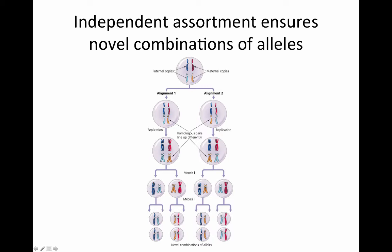This means that copies of the chromosomes inherited from the father and those inherited from the mother can recombine into any combination. So here with just these two chromosomes, we can have blue with blue, blue with yellow, yellow with red, or blue with red. This allows the different characteristics of the two parents to be scrambled in a new way in each individual gamete, and therefore in each individual offspring — giving us novel combinations of alleles.